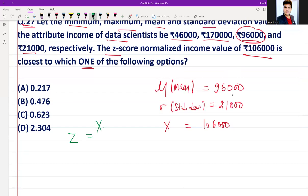If you go here, the calculation would simply look like ₹1,06,000 minus the μ, that is ₹96,000, and divide by σ, that is ₹21,000, the standard deviation. The resultant value that we are going to get for this z-score is 0.476.